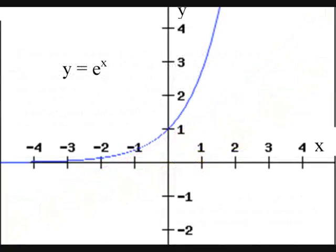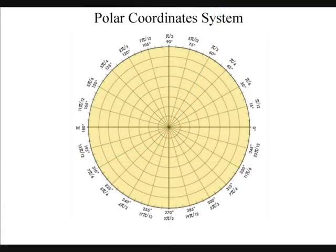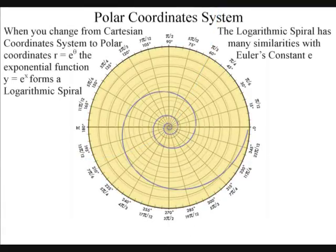A good way to visualize this is to take the exponential function and change the coordinate system from Cartesian coordination to polar coordination. When we do this, the graph turns into a logarithmic spiral that is self-similar, with all the branches having the same shape and rotational angle.